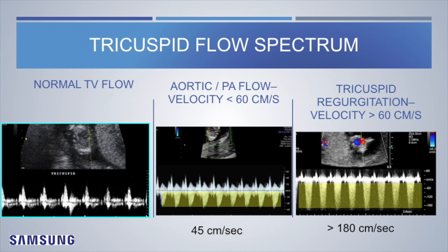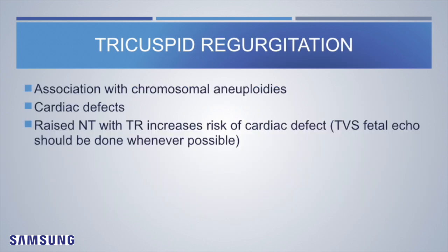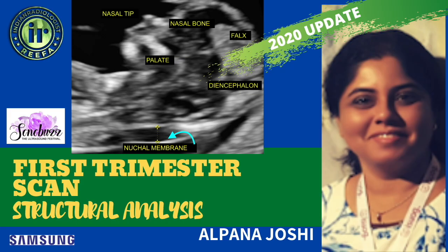Tricuspid regurgitation is associated with chromosomal aneuploidies and cardiac defects. Raised NT associated with TR will definitely increase the risk of cardiac effects, and a TVS fetal echo should be done whenever possible. With this we end this video, and in the next video we will talk about structural analysis of the fetal structures.